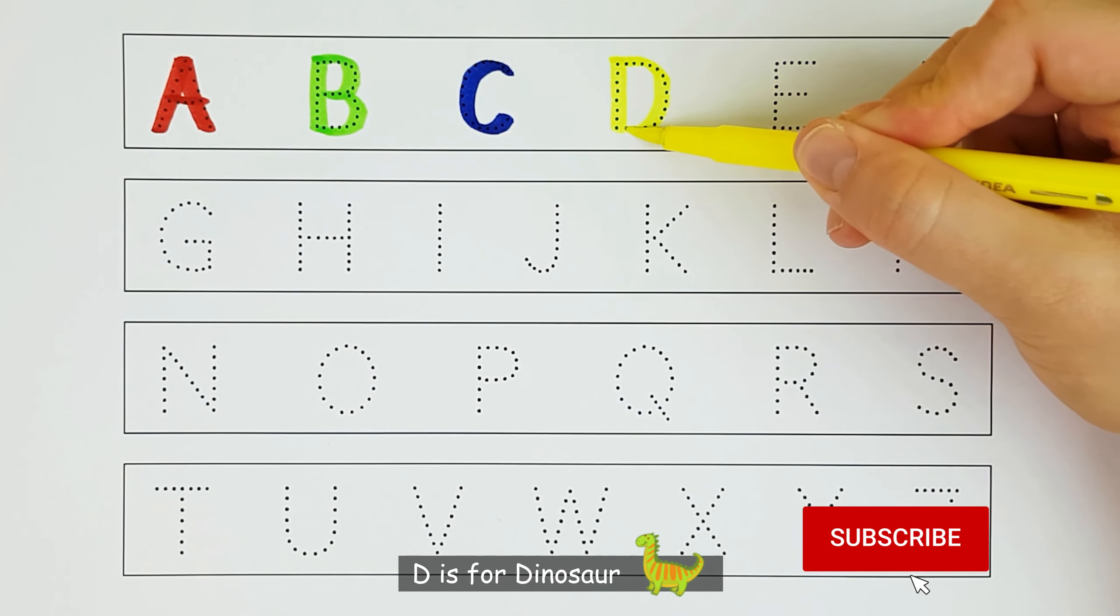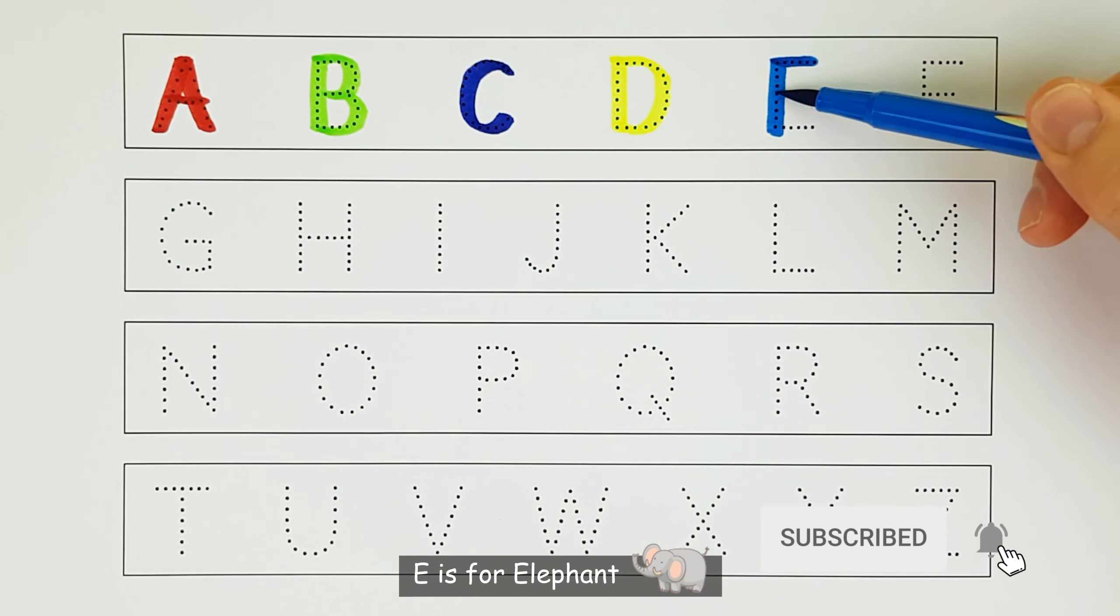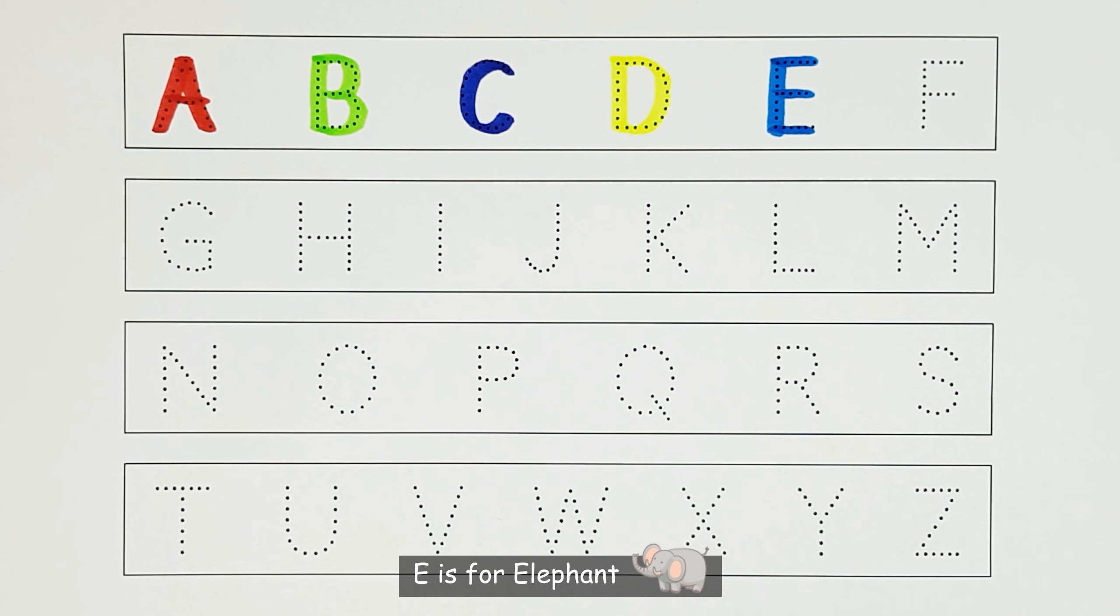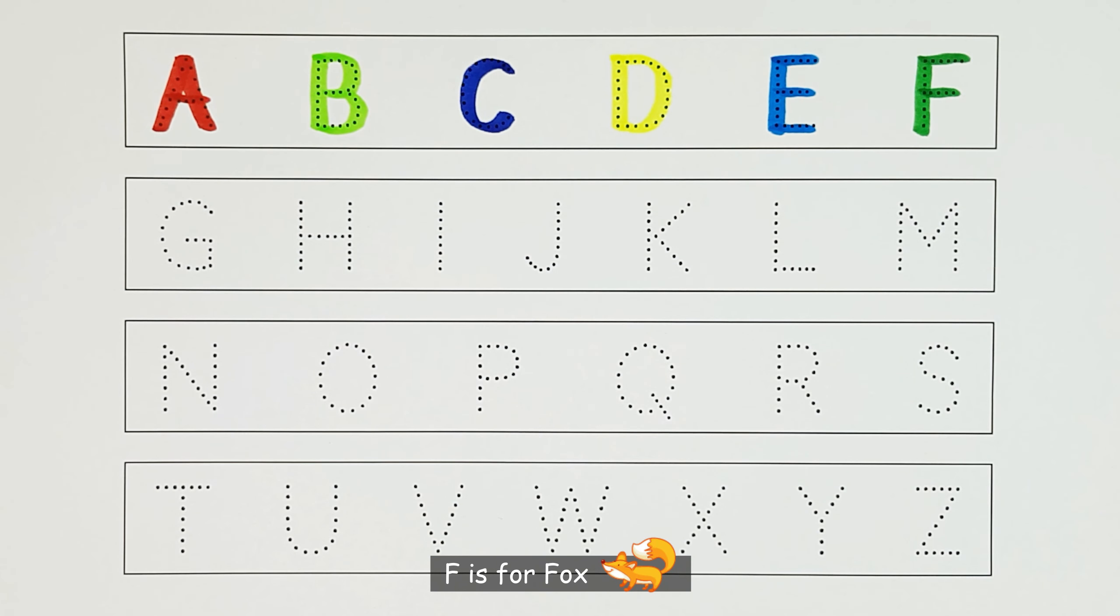D. D is for dinosaur. D. E. E is for elephant. E. F. F is for fox. F.